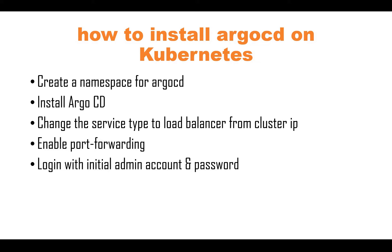In this tutorial we'll see how to install ArgoCD on Kubernetes, step by step. You create a namespace for ArgoCD, install ArgoCD, then change the existing service from ClusterIP to LoadBalancer so you can enable port forwarding and access the ArgoCD web UI in a browser. You log in with the initial admin account, and I'll show you how to get the password. Additional steps like setting up your application and integrating with GitHub will be covered in later videos.